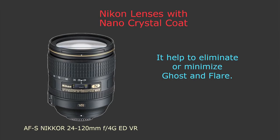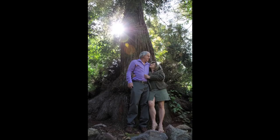Another Nikon feature is nano crystal coat, indicated by the letter N on the lens. It helps to eliminate or minimize ghost and flare. Flare appears in photos when you shoot directly into the sun — you get colorful circles in your picture that can also influence sharpness and contrast. But as you can see, it's not always a bad thing — sometimes photos with flares can look very cool.